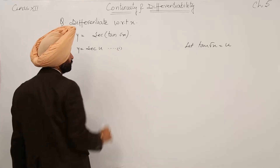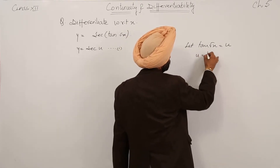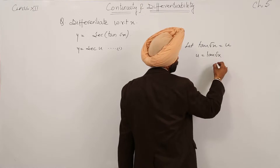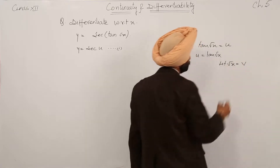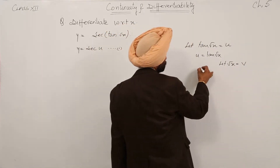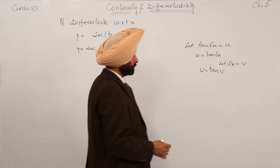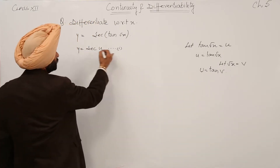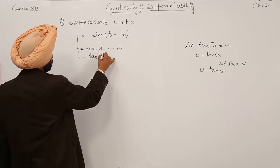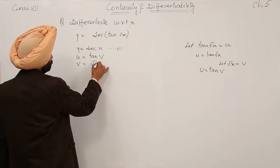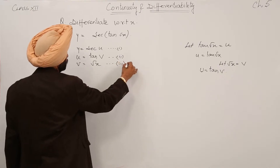This is the first part. For this part, we are having u is equal to tan under root x. We can write it again: let under root x be equal to v. Then u becomes equal to tan v. So we have y equal to secant u, then u equal to tan v, and then v equal to root x — 1, 2, and 3 different functions.